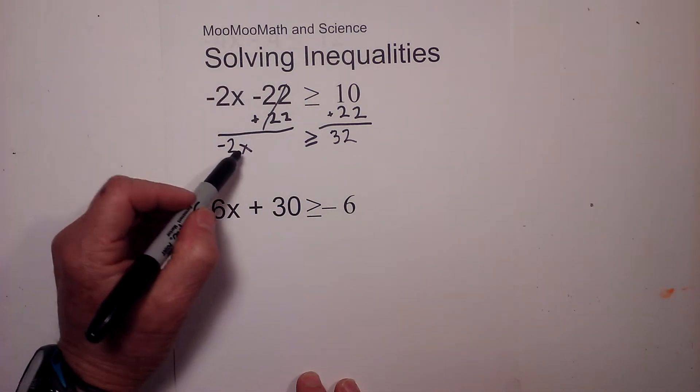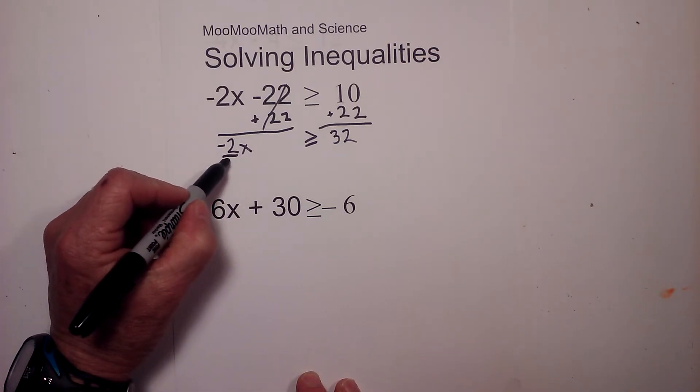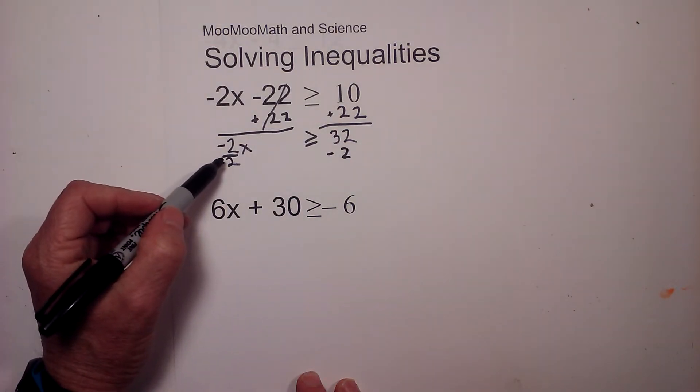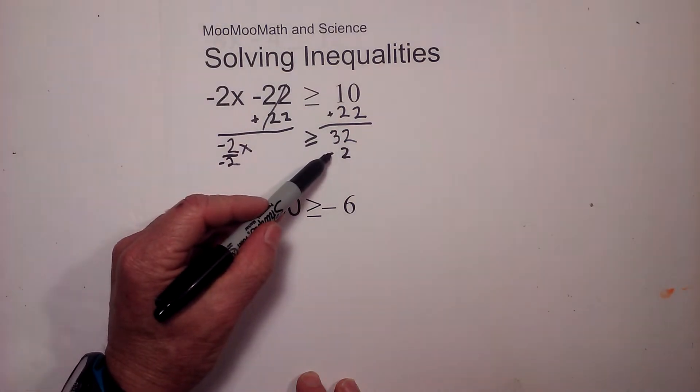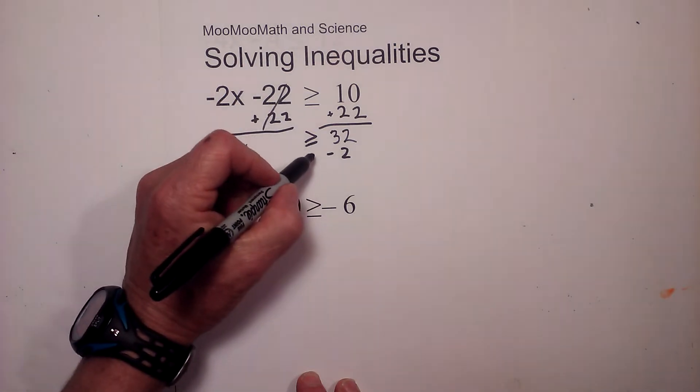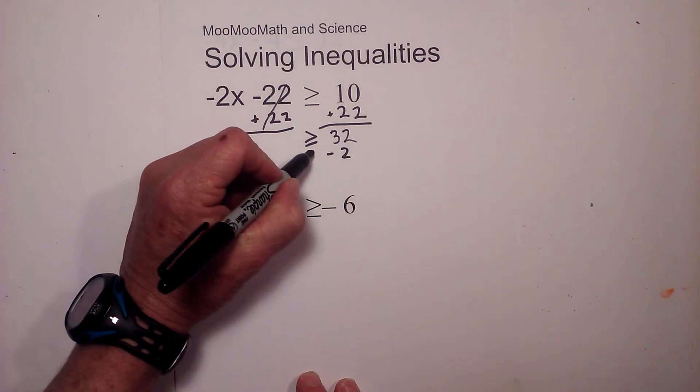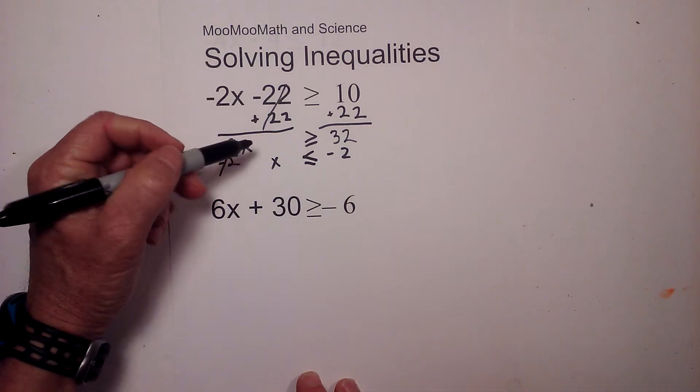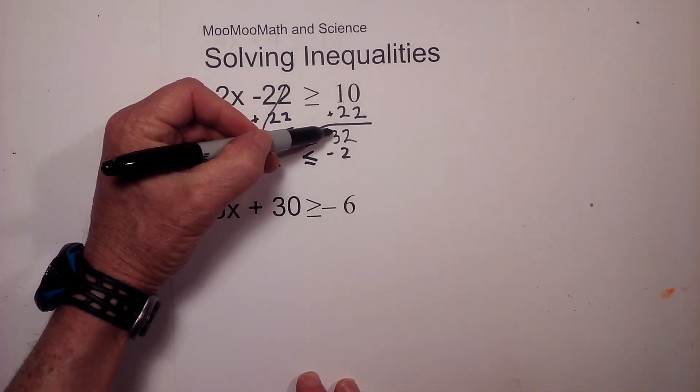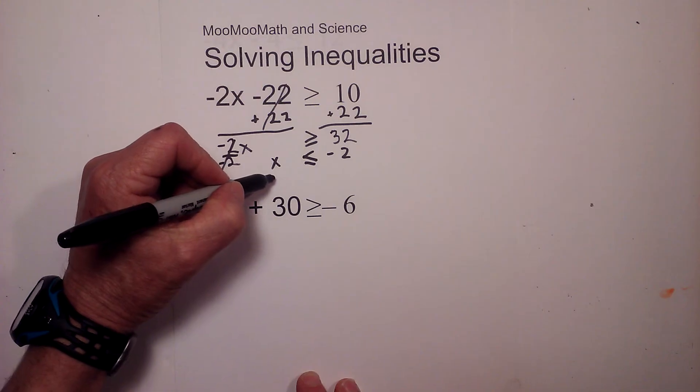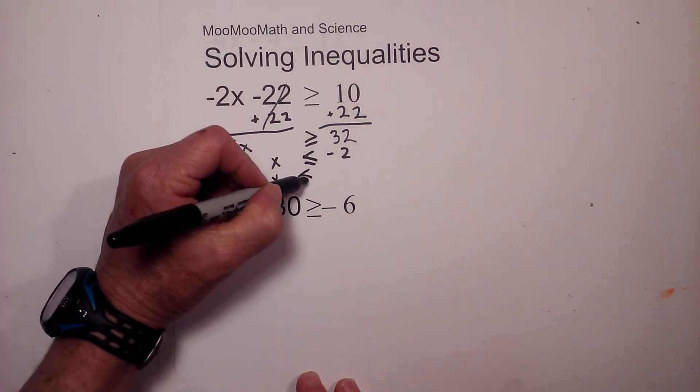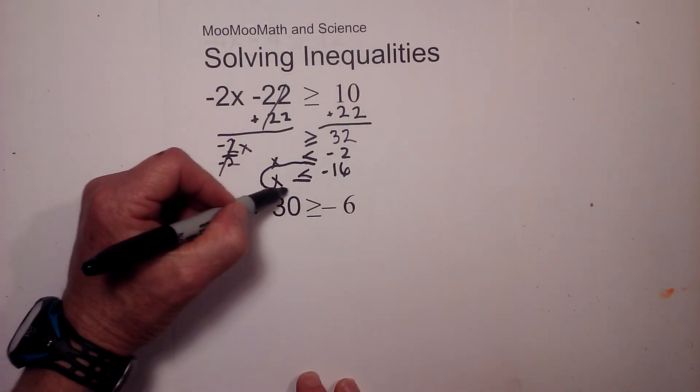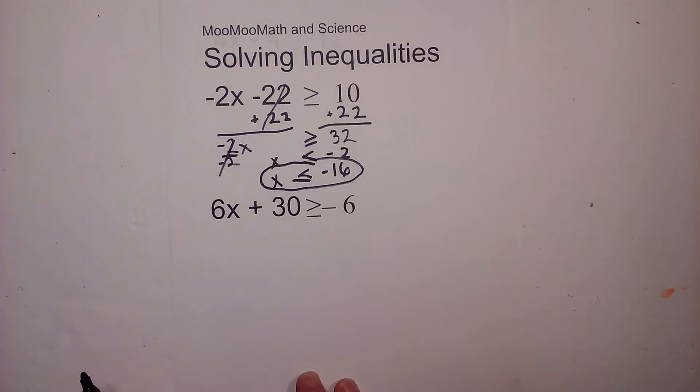Next, we need to get x by itself by dividing by negative 2. Now, whenever you have an inequality and you multiply or divide by a negative number as your last step, you switch the signs. So I'm going to switch the signs to less than or equal to. The 2's cancel and then 32 divided by 2 is negative 16. So it will be x is less than or equal to negative 16.